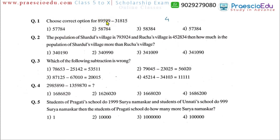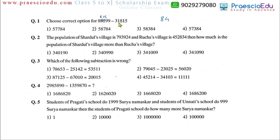The 9 at the tens position minus 1 gives 8. Then at the hundreds place, 5 minus 8 is not possible, so we borrow 1 from the higher place, making it 15. So 15 minus 8 is 7, and 8 minus 1 is 7. Then 8 minus 3 is 5. So the answer is 57,784, which is option number 1.